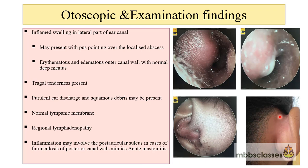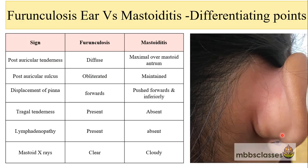In this picture, the postauricular region shows inflammation, and the pinna is displaced outward and forward. When a furuncle involves the posterior canal wall and we cannot visualize the tympanic membrane, we must rule out mastoiditis. Regarding postauricular tenderness: in furunculosis, the whole postauricular area will be diffusely tender, but in mastoiditis the maximal tenderness is found at the mastoid antrum area. In furunculosis involving the posterior canal wall, the postauricular sulcus is obliterated.